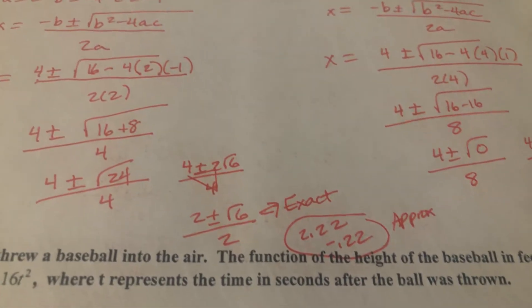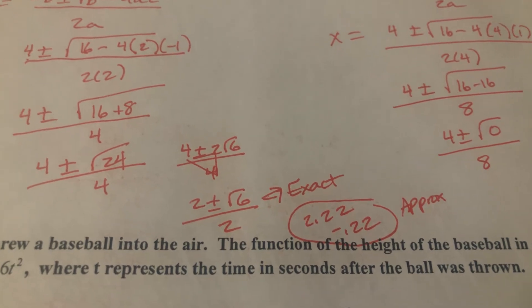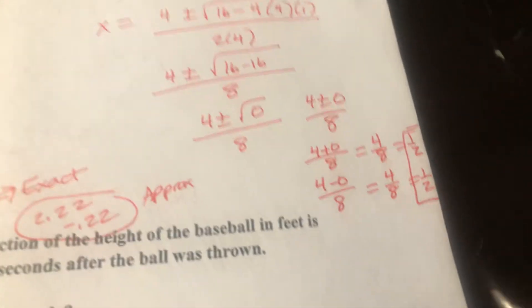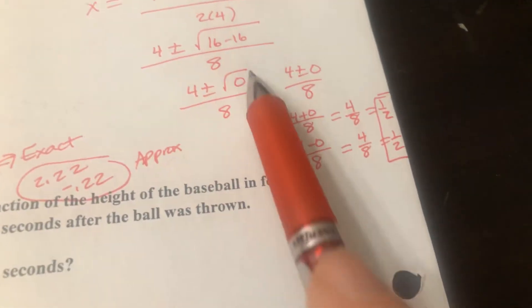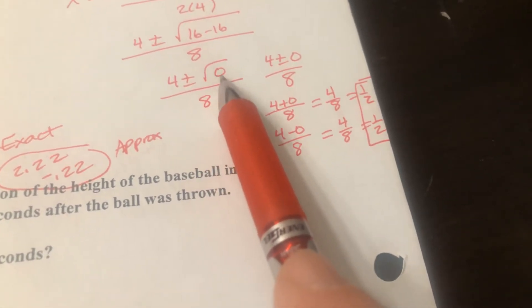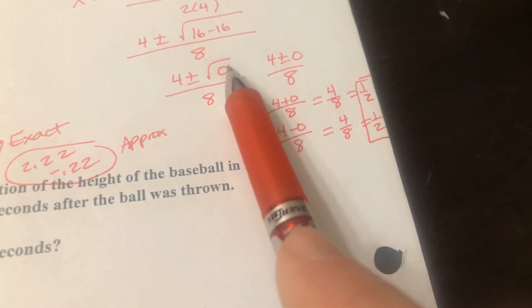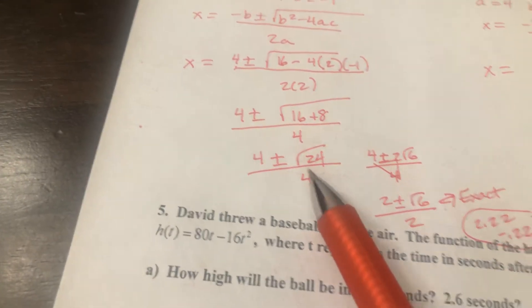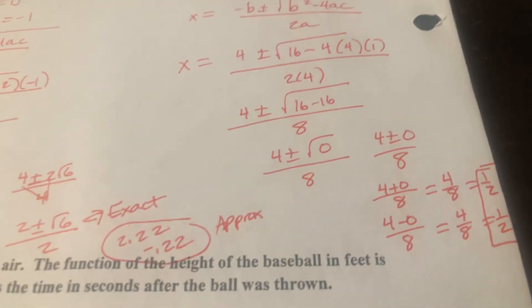And leading to tomorrow's lesson, why does that happen? Why did I only get one answer? Specifically because this guy is 0. And I'm going to give a name to this guy tomorrow. This guy is going to have this 0. This 24 is going to have a name tomorrow. But so far, it doesn't.